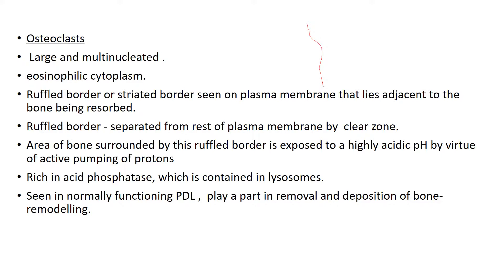This osteoclast develops a ruffled border where it has to resorb the bone. This ruffled border of the cell is separated from the adjacent cytoplasm by a clear zone. The advantage of this ruffled border is that the substances required for resorption of the bone are delivered into the site of resorption very precisely — meaning it is localized.